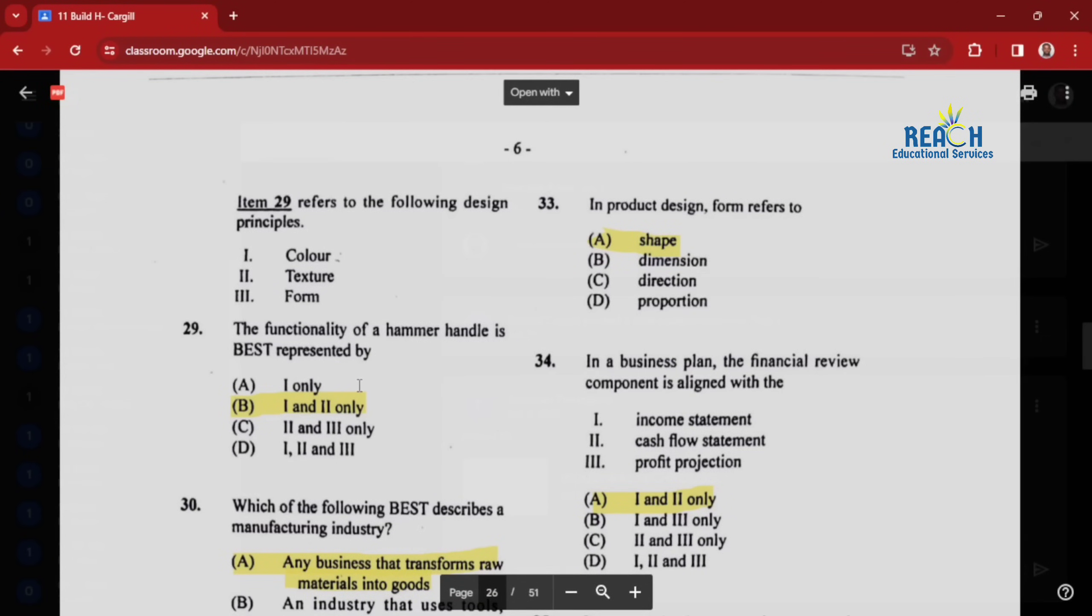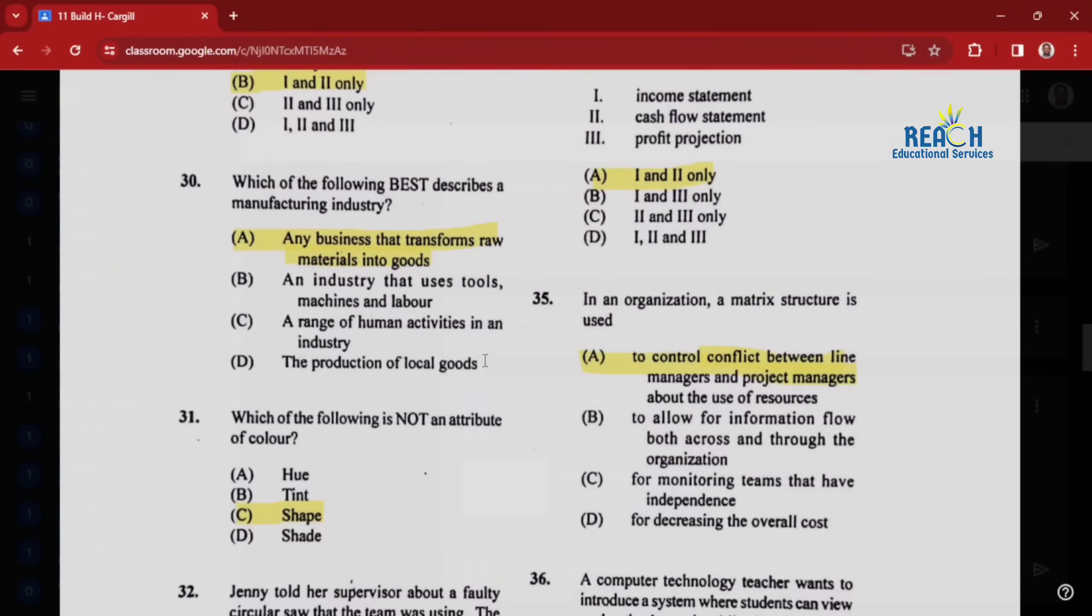It says one and two only, so color and texture. I would say this would be two and three for me - the texture and the form. The form is the shape, like the shape of the handle fits in your hand, and texture would mean how does it feel, is it slippery, are you able to hold the hammer properly. I would say two and three here instead of one and two, because the color has nothing to do with it. Question thirty: which of the following best describes a manufacturing industry? Any business that transforms raw materials into goods.